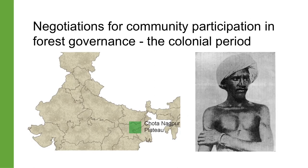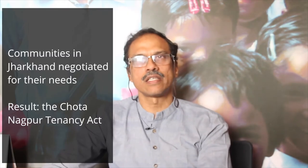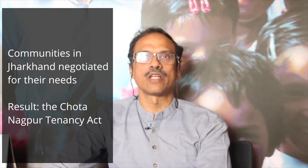In Jharkhand, for example, the British never fully quelled the Birsa Munda rebellion but realized they would never be able to really control the forestry landscape, and so they created the Chota Nagpur Tenancy Act, where they gave certain rights to communities to manage their forests pretty much on their own.